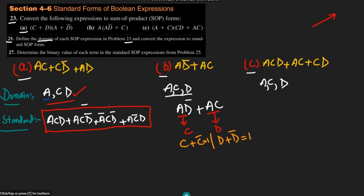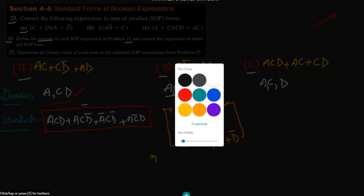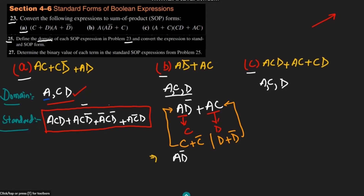Both (c + c') and (d + d') are always equal to 1, so multiplying by them does not change the expression. We will multiply ad' by (c + c'), and ac by (d + d'). So we get: ad'(c + c') + ac(d + d').